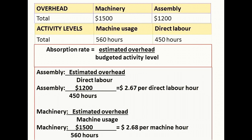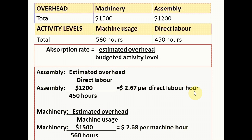To calculate the assembly absorption rate, we take the estimated overhead of 1200 and divide it by the budgeted activity level. For the assembly department, we use direct labor hours, because direct labor is the work done by employees in the assembly production department to make products. So we take 1200 divided by 450 hours to get an absorption rate of $2.67 per direct labor hour.